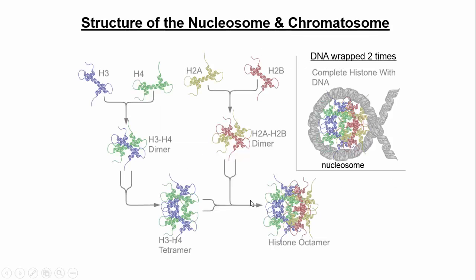This is showing you how they form. An H3 and H4 come together to form a dimer, and at the same time an H2A and H2B interact to form a dimer. Dimer just means two protein subunits. Then these dimers come together to form a tetramer, and eventually two tetramers interact to form an octamer. That's the nucleosome core. Once you wrap the DNA around it, it's a nucleosome; add H1, and it's a chromatosome.